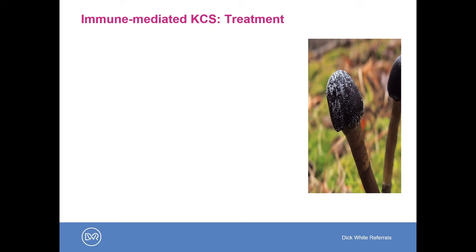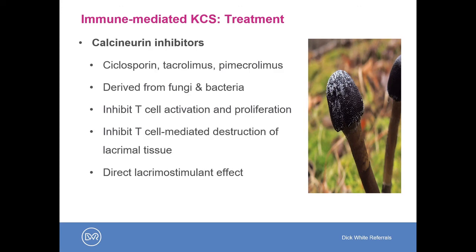On to treatment of immune-mediated dry eye, which will be the most common cases we'll be treating. Usually we're talking about the use of some kind of immunomodulator from the calcineurin inhibitor class — this includes cyclosporine, tacrolimus, and pimecrolimus. These agents, derived from natural sources (fungi and bacteria), work by inhibiting T-cell activation and proliferation within the T-cell itself, thereby inhibiting T-cell mediated destruction of the lacrimal tissue. There is also evidence that they can have a direct lacrimostimulant effect and other beneficial effects for ocular surface health — so we'll often use these not only for dry eye but also for treatment of corneal inflammation and corneal pigmentation.